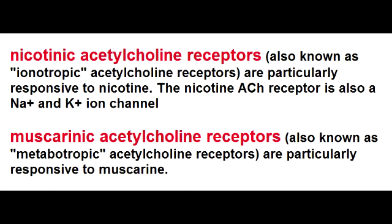What are the two acetylcholine receptors? The two acetylcholine receptors are the nicotinic receptors and the muscarinic receptors. Nicotinic acetylcholine receptors form ligand-gated sodium-potassium channels. The nicotinic N receptors are found in the autonomic ganglia, and the nicotinic M receptors are found at the neuromuscular junction.